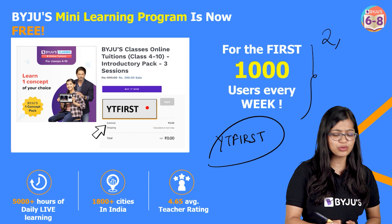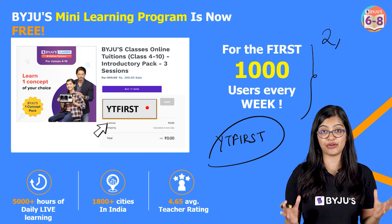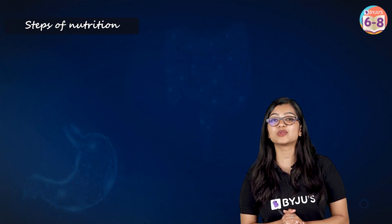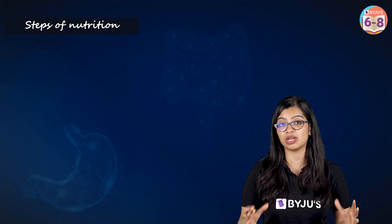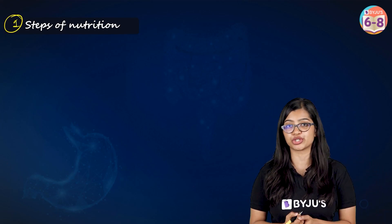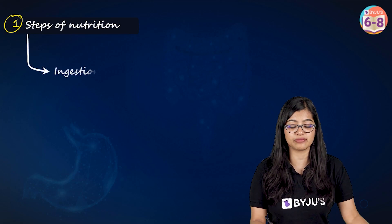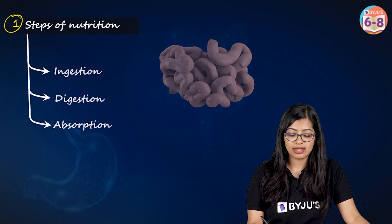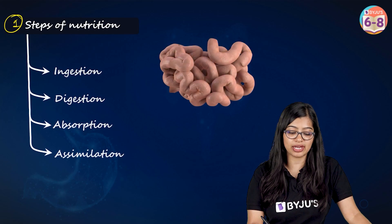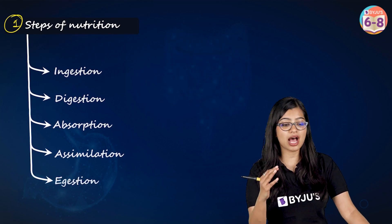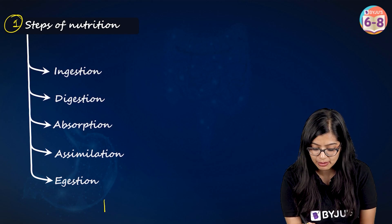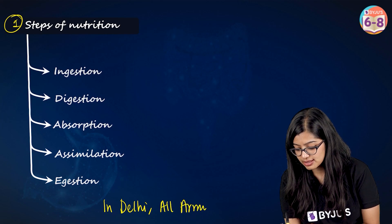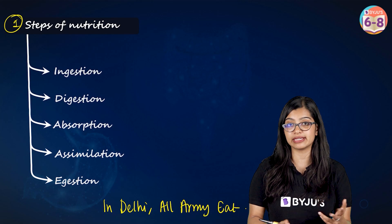Now let's get started with our easiest mind map for nutrition in animals. In this chapter we learnt about three broad concepts, starting with the steps of nutrition. There are 5 steps: ingestion, digestion, absorption, assimilation, and lastly egestion. These are the 5 steps in sequence, and there is a simple mnemonic to help us remember — 'In Delhi All Army Eat Right.' So that's one way of remembering this.